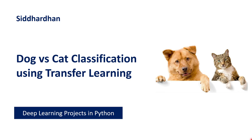Hello everyone, I am Siddharthan. In today's video we will be building a dog vs cat classification system using transfer learning. We will be using a pre-trained model called MobileNet V2, where we will train that model on images of dogs and cats. In turn, this model can tell you whether an image represents a dog or a cat.